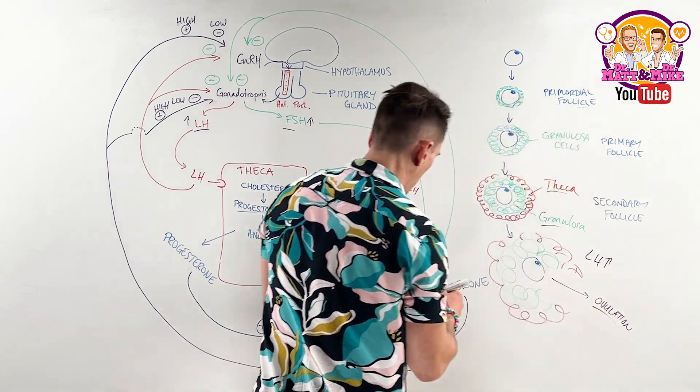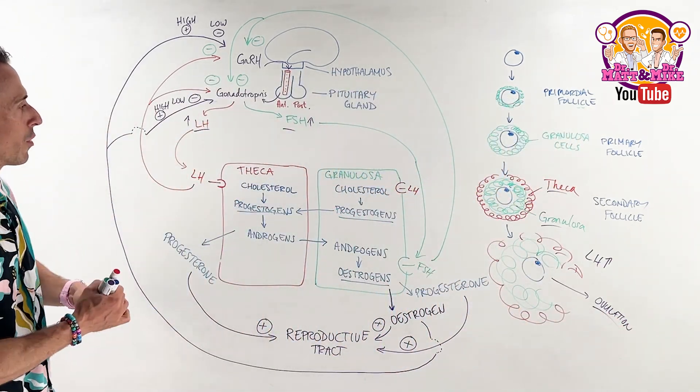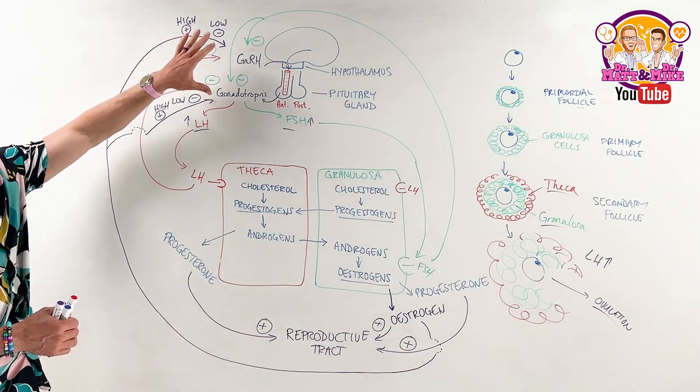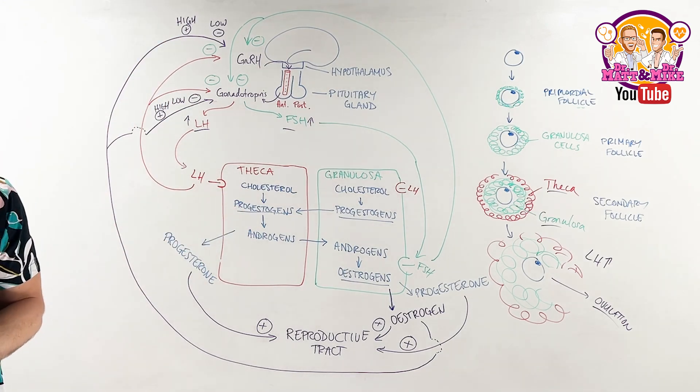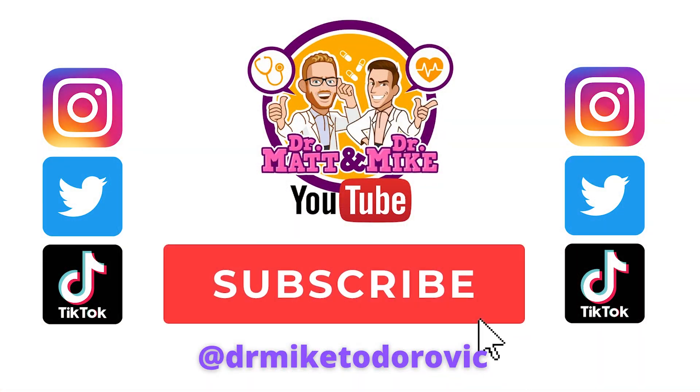So, generally speaking, what we've got here, very briefly, is the hypothalamus-pituitary-ovarian axis. Hi, everyone. Dr. Mike here. If you enjoyed this video, please hit like and subscribe. We've got hundreds of others just like this. If you want to contact us, please do so on social media. We are on Instagram, Twitter, and TikTok at DrMikeTodoravic. Speak to you soon.